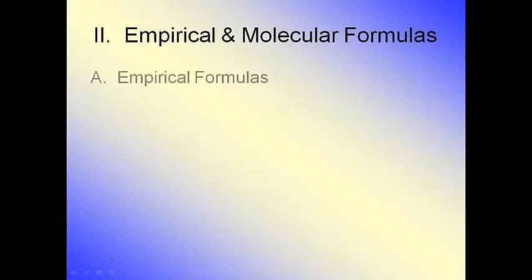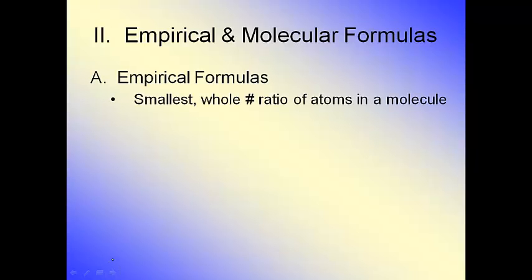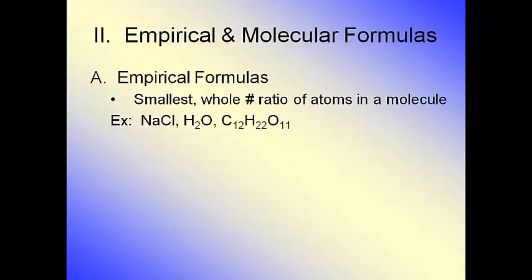What you need to know about empirical formulas: empirical formulas are the smallest whole number ratio of atoms in a molecule. For example, sodium chloride, H2O, and C12H22O11. Notice that the subscripts in the formula cannot be reduced down any farther than they already are — they're in the smallest whole number ratio they're supposed to be.